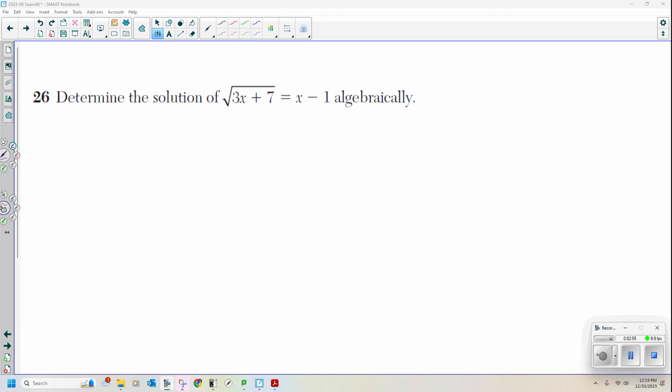Determine the solution of the square root of 3x plus 7 equals x minus 1 algebraically. Again, if you couldn't do this algebraically, I would like you to put this into y1, the left side, and put this into y2 in the calculator on the right side, and then use your intercept function and see where they intersect, and just write down the answer. You'll get one point out of the two, but I'm going to show you how to do this algebraically.